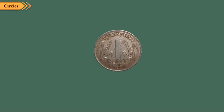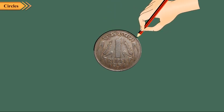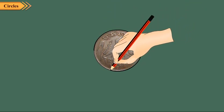Take a 1 rupee coin or a cap of a cold drink bottle and place it on the paper. Using a pencil, draw its outline. The closed figure so obtained is a circle.